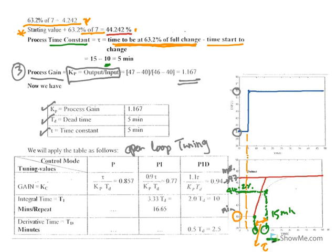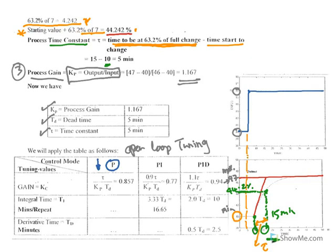From the open-loop tuning table: if you want proportional-only control, use those cells. For PI control, use the PI equations. For PID, use the PID equations. For example, for PI control, KC equals 0.9 times tau over KP times TD, and the result is 0.77. This is the controller gain.